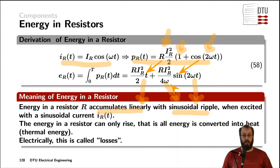The physical meaning of that equation is that the energy in a resistor can only rise. All the electrical energy entering the resistor as current and voltage, which gets converted into power, can only disappear — it is physically converted into thermal energy. From an electrical perspective, we call that losses, because we cannot get this energy back in terms of current or voltage.